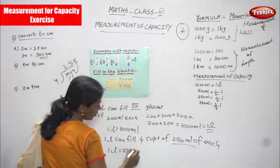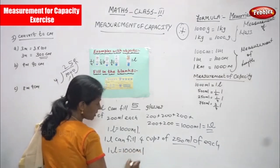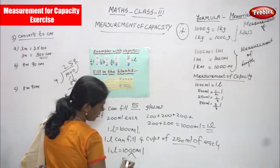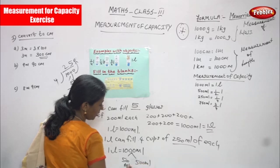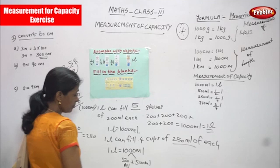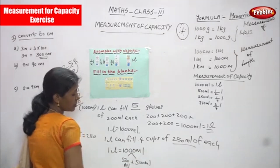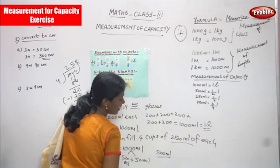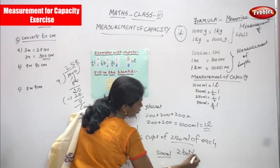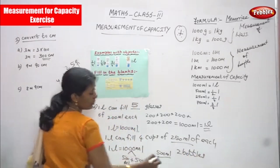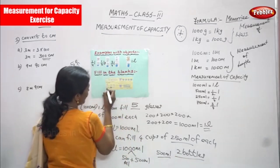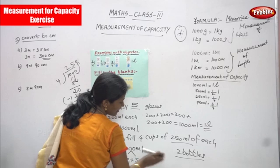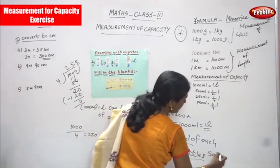So one liter is nothing but 1000 ml. 1000 ml is going to split: 500 ml and then 500 ml. So 500 plus 500 you can get 1000 ml. So one liter is nothing but 1000 ml — this water is going to split into two bottles. Each bottle contains 500 ml. So first answer is two bottles, and second answer is 500 ml each.